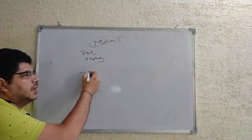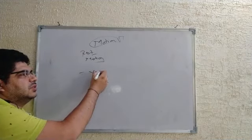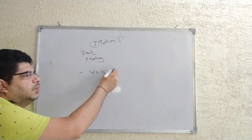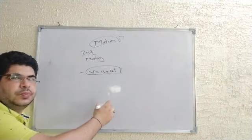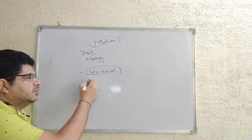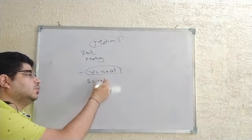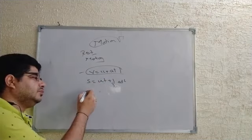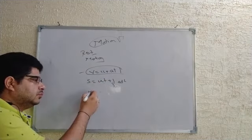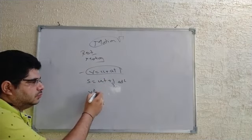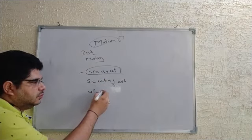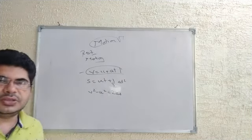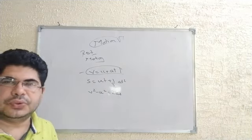The first equation of motion is: v equals u plus at. The second equation is: s equals ut plus half at squared. The third equation is: v squared minus u squared equals 2as.